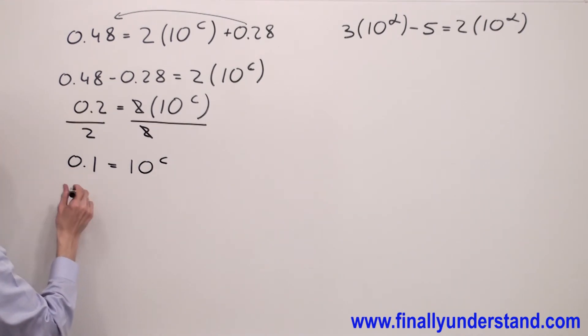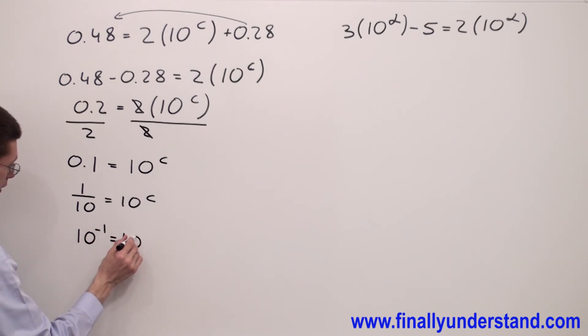One tenth, 1 tenth is equal to 10 to C. I can convert the fraction to the power and I'm going to have 10 to negative 1 equals 10 to C.